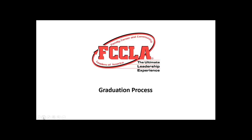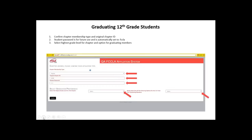I'm going to walk you through three different ways to graduate students today. The first is graduating 12th grade students — those who were in 12th grade during the 2014-2015 affiliation year. When you log in, the first screen will ask you to confirm some information about your chapter: your chapter membership type, the original chapter ID, and the student password, which is automatically set to FCCLA so you won't need to change it.